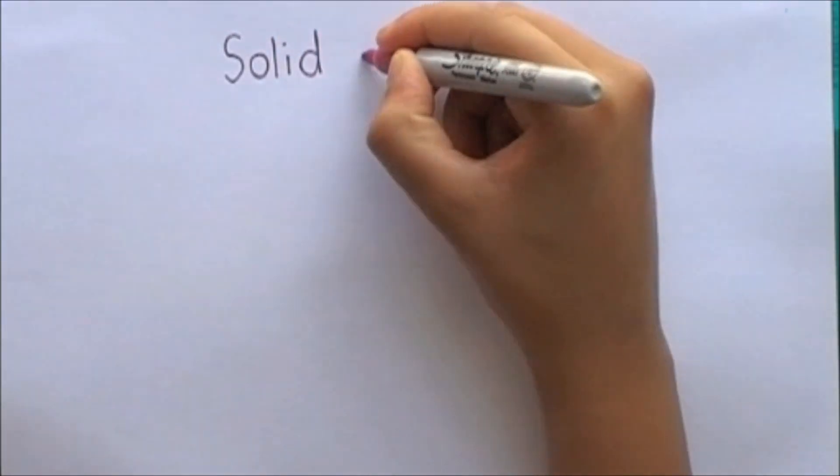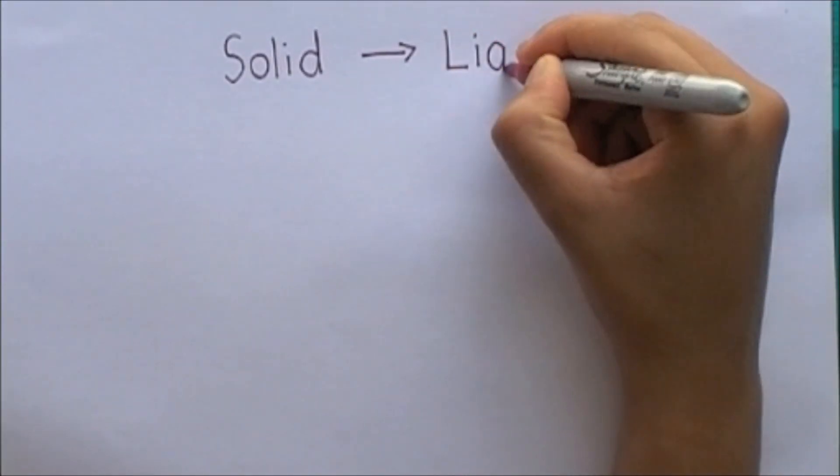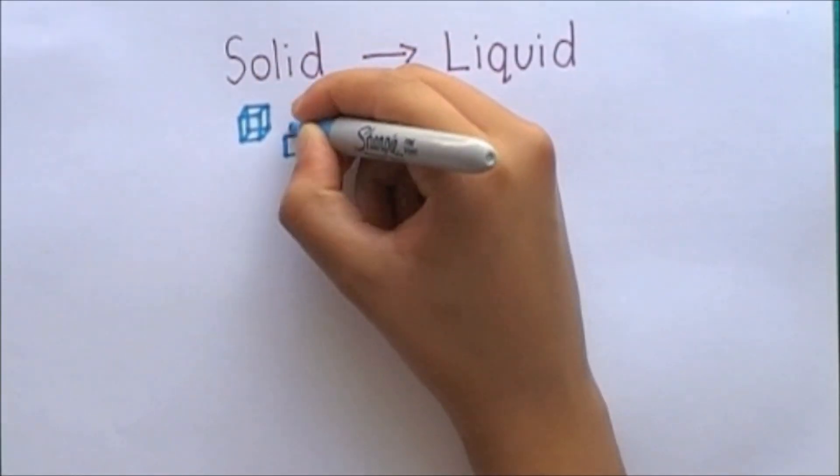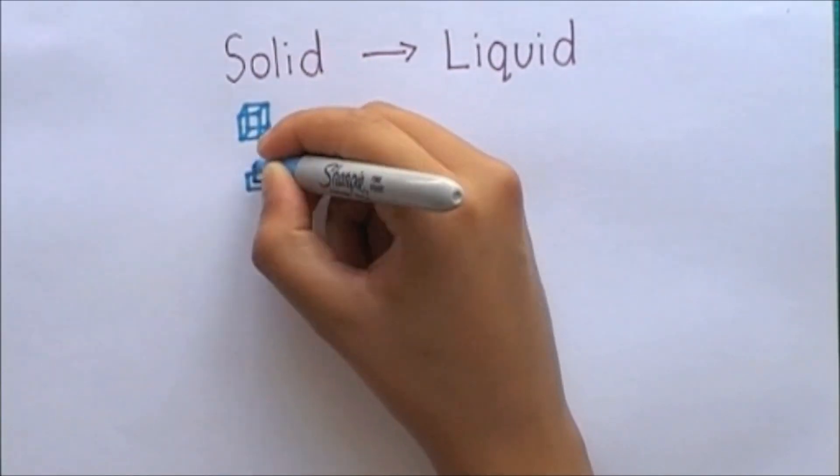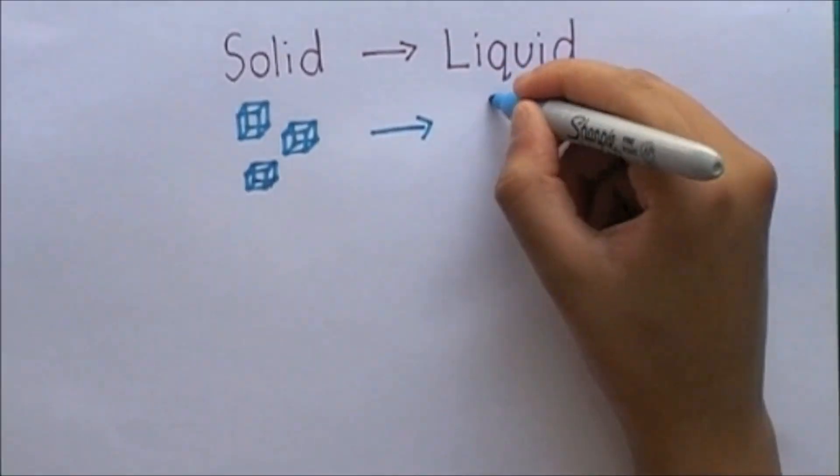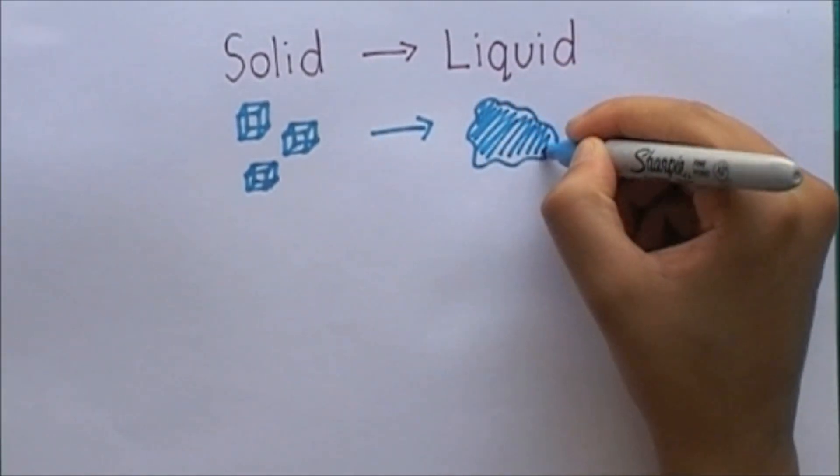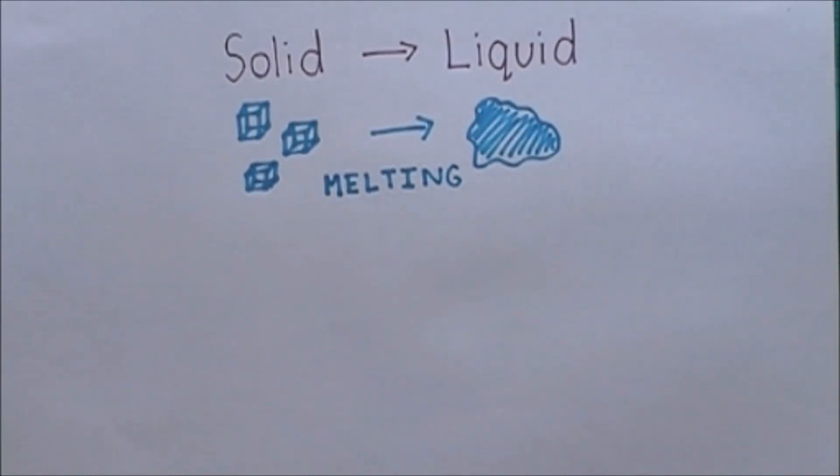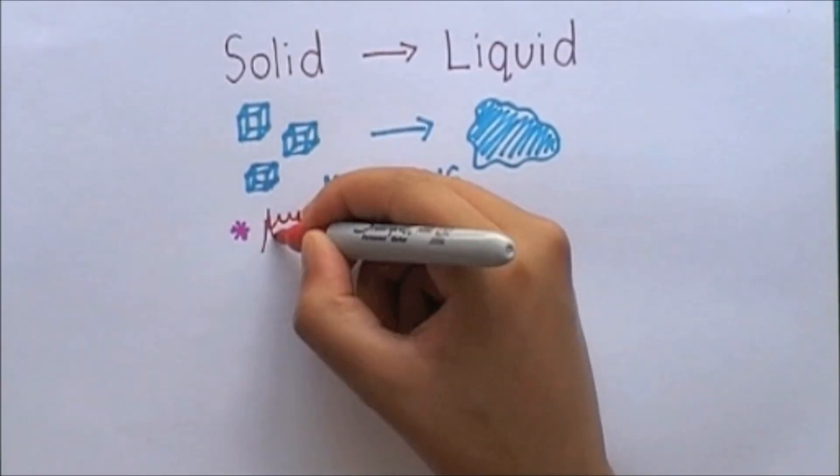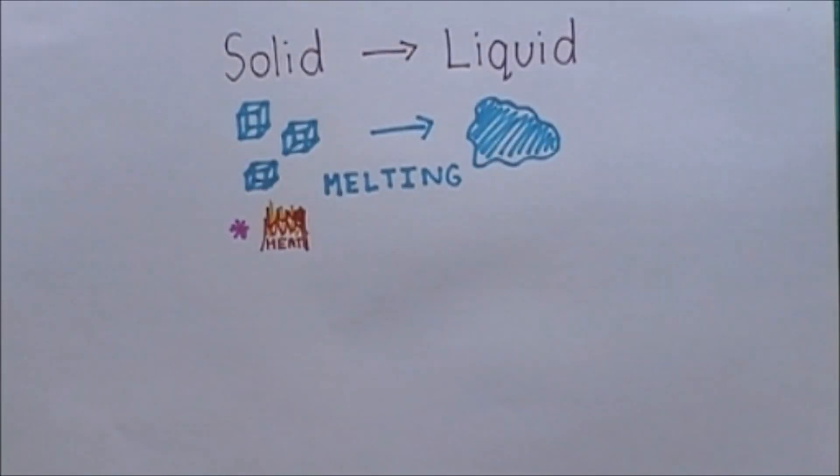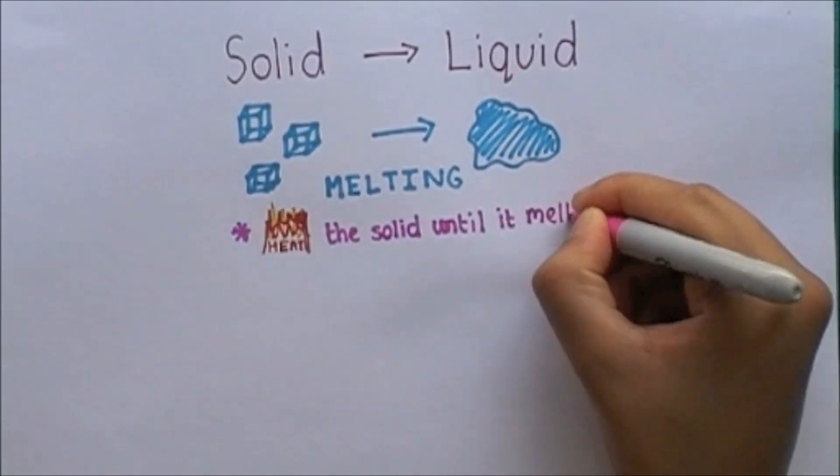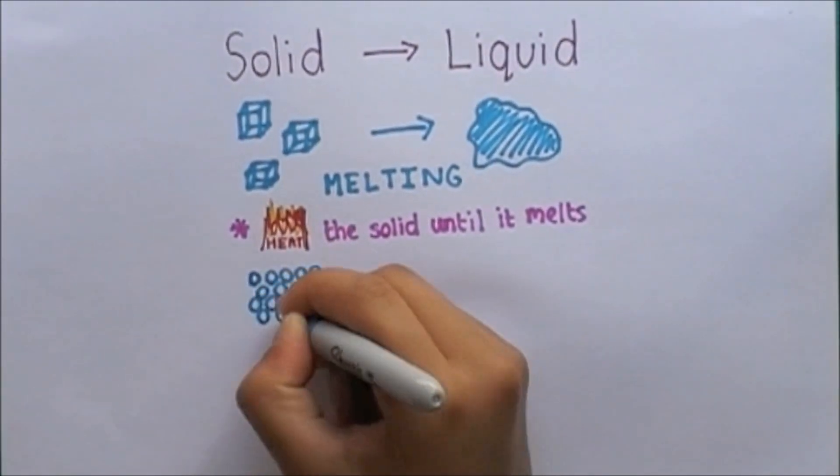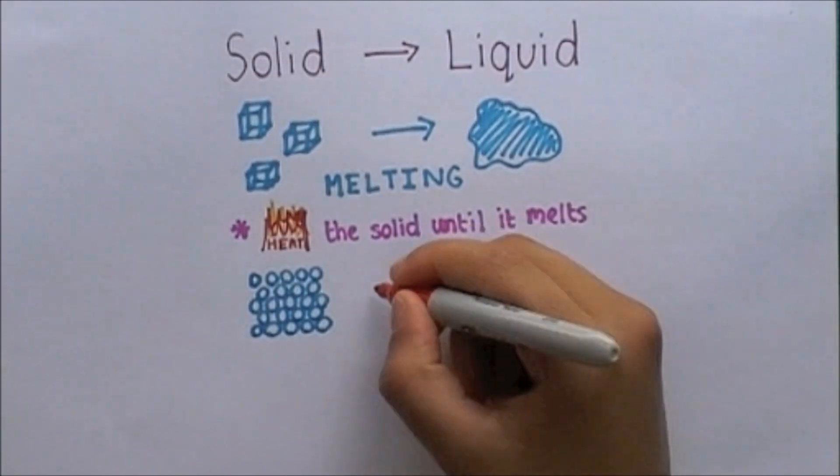The first change of state is from solid to liquid and it is called melting. This change is brought about by heating the solid until it melts into a liquid. These diagrams represent the change that occurs to the particles during the change of state.